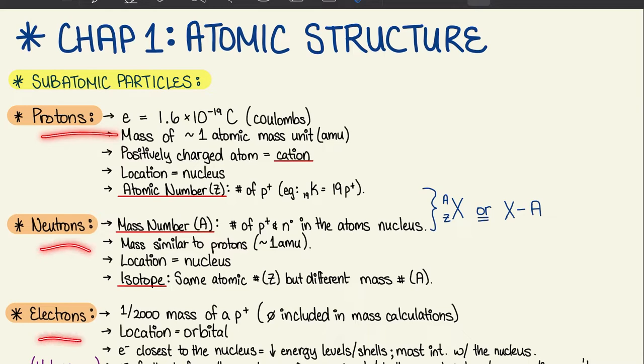There are three particles that make up the atom: protons, neutrons, and electrons. Protons are found in the nucleus. They have a charge of 1.6 times 10 to the negative 19 coulombs — coulombs is represented with a capital C. The mass of protons is approximately one atomic mass unit, or AMU. These positively charged ions are cations. The way I like to remember this is that the T in the middle of the word cation is actually a positive sign.